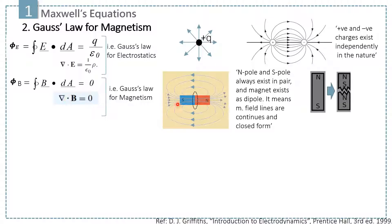Now, let's take a Gaussian surface around this magnet. To understand the total flux through that Gaussian surface, the magnetic field lines coming in from the south pole and leaving the Gaussian surface at the north pole do so at the same rate. This means the total net flux is zero.